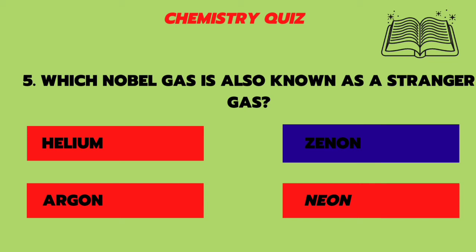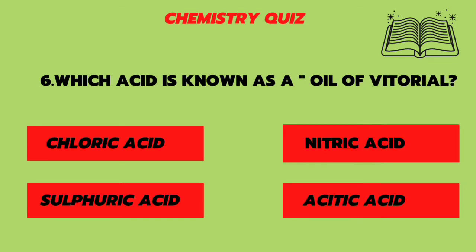Sixth question: which acid is known as the oil of vitriol — chloric acid, nitric acid, sulfuric acid, or acetic acid? The answer is sulfuric acid.